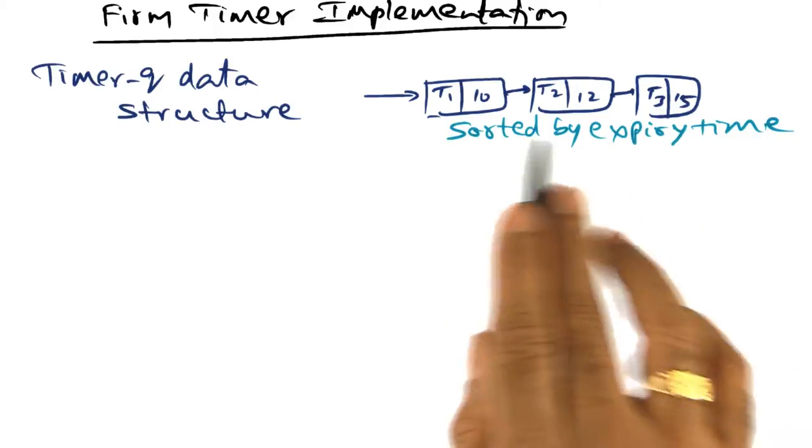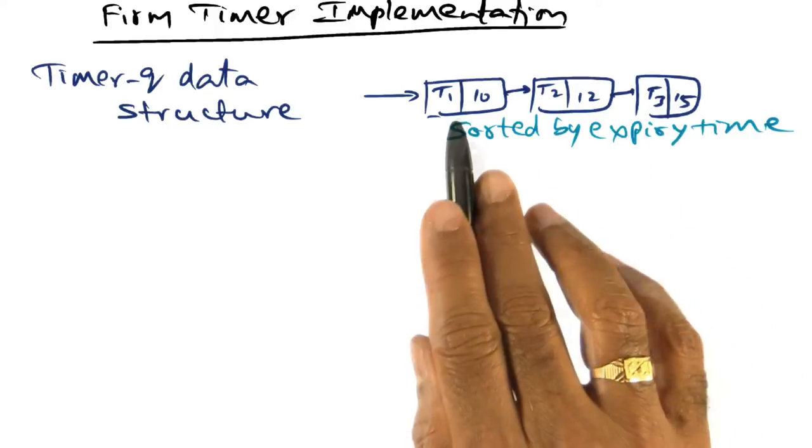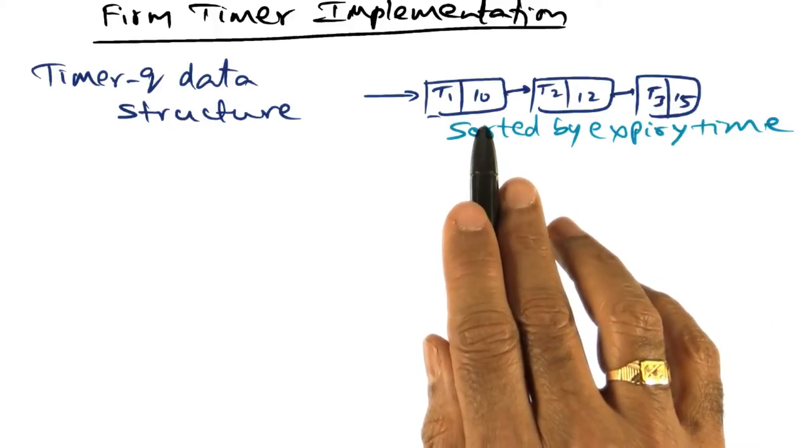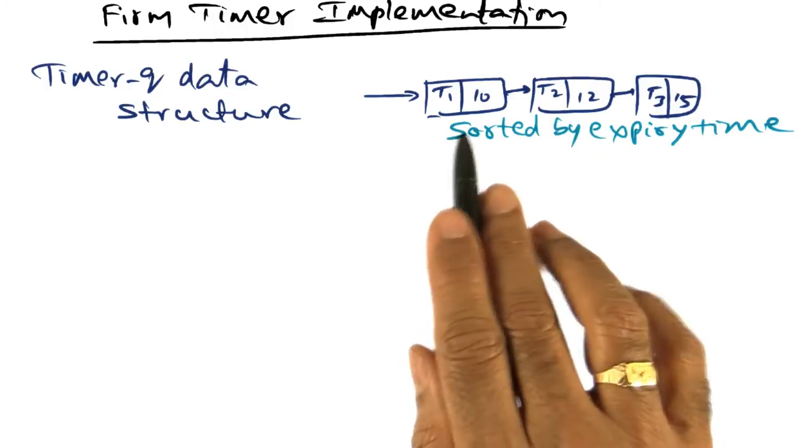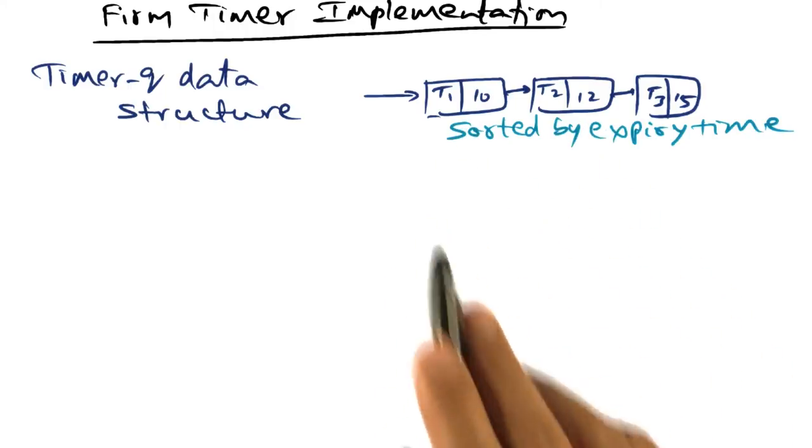This is the way the kernel is maintaining the data structure to know when a particular task expiry time is up for processing the event associated with that particular task.